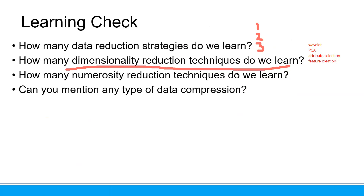How many numerosity reduction techniques do we learn? We have parametric and non-parametric. For the parametric, we assume we have a model, like regression. For the non-parametric, we have methods like using a histogram — with histograms we can do binning. In non-parametric we can also use clustering, though we have not used clustering yet. And sampling.